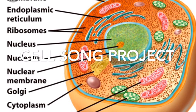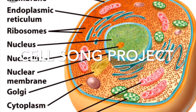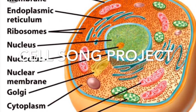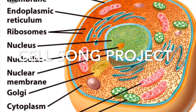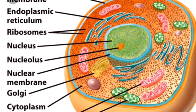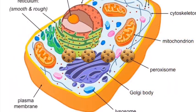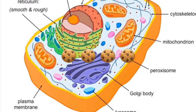Centrioles organize cell division and are only found in animal cells. Now let's talk about the organelles that build proteins.